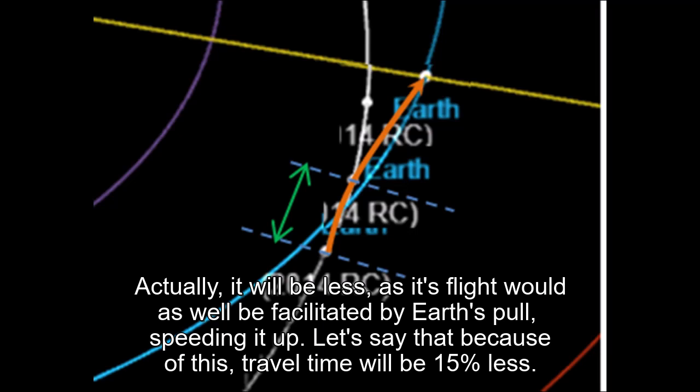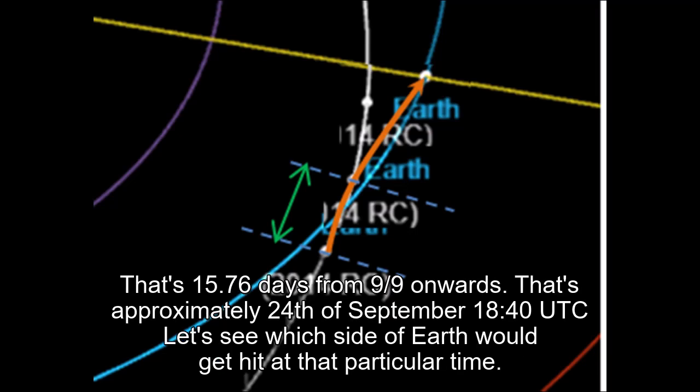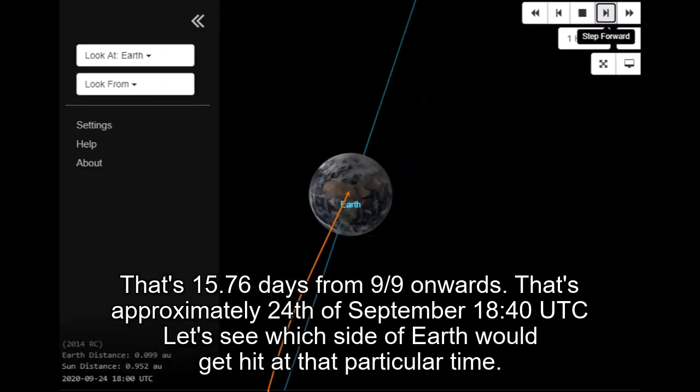Actually, it will be less, as its flight would as well be facilitated by Earth's pull, speeding it up. Let's say that because of this, travel time will be 15% less. That's 15.76 days from September 9th onwards. That's approximately 24th of September 1840 UTC.